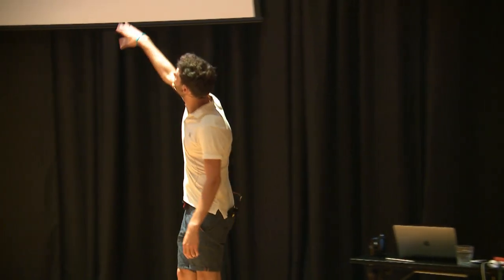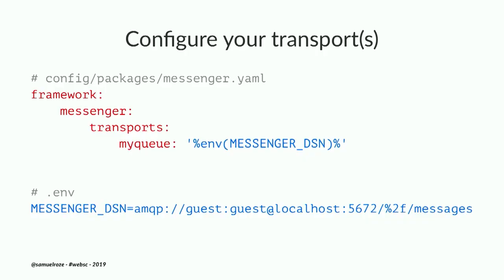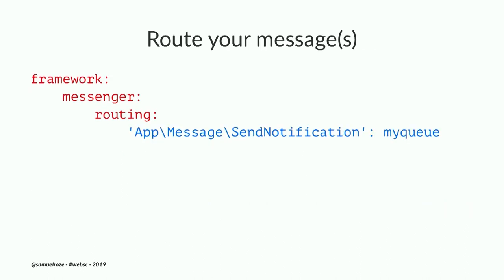In your configuration under `framework.messenger.transports`, you create a transport — for example `myQueue`. Here's the DSN example: `amqp://guest:guest@localhost` with the queue name and exchange. That's how you configure it. Once you've configured your transport, the thing you need to do is route a specific message to it. In the routing configuration you say: this `SendNotification` message will go through the `myQueue` transport.